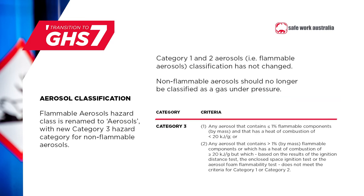First, we'll discuss aerosols. GHS7 renames the flammable aerosols hazard class to aerosols and adds a new hazard category for non-flammable aerosols — that's Category 3. Non-flammable aerosols are aerosols that don't meet the criteria for Categories 1 and 2, that contain less than or equal to 1% flammable components, and that have a heat of combustion of less than 20 kJ per gram. This means that all aerosol dispensers will now be captured in the aerosols hazard class and will meet the definition of a hazardous chemical under the Model Work Health and Safety laws.